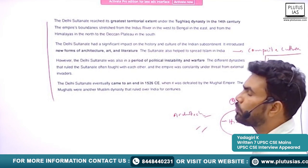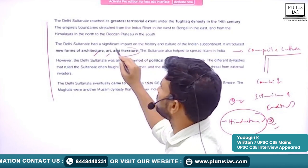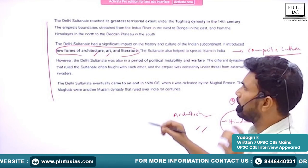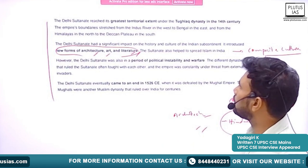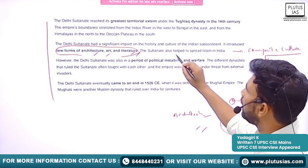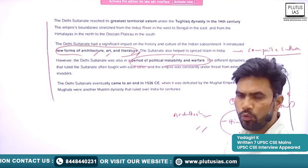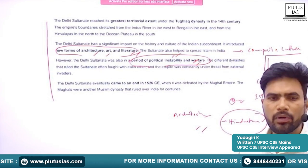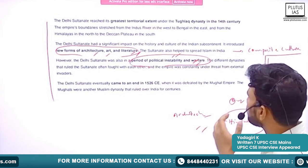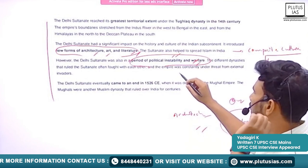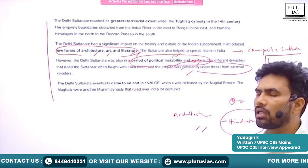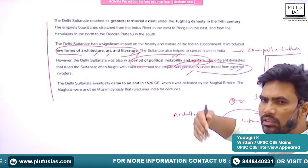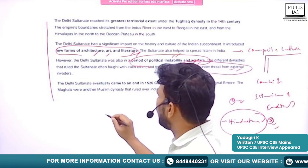New forms of architecture, art, and literature have been introduced by the incoming of Islamic rule in India. We will see progress in all these areas. Apart from that, this period is also known for political instability and warfare. During this period, we will see continuous warfare and political instability. The empire was constantly under the threat of foreign invaders — a series of external invasions.